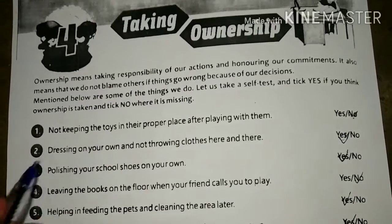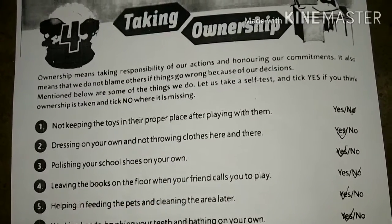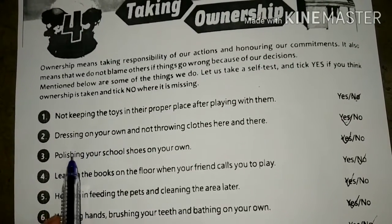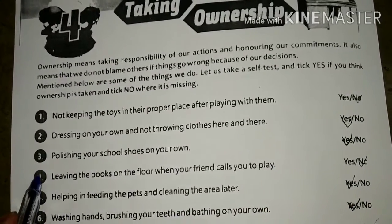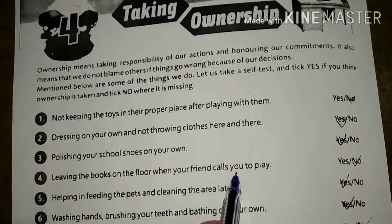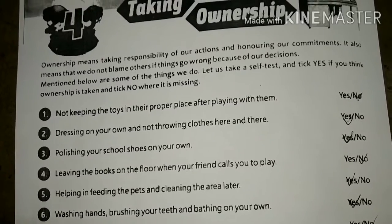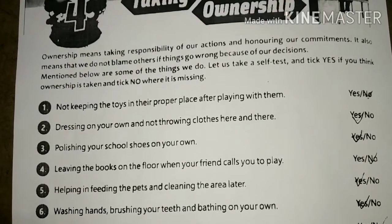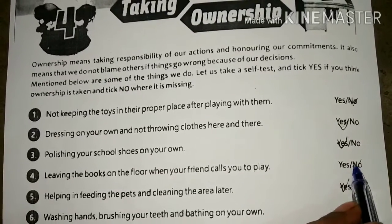Point 3: Polishing your school shoes on your own. Point 4: Leaving the books on the floor when your friend calls you to play. If you are reading your book and your friends call you to play and you leave your book on the floor, that shows a lack of ownership.